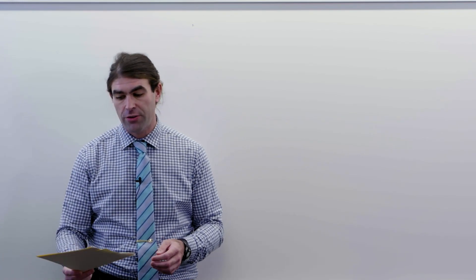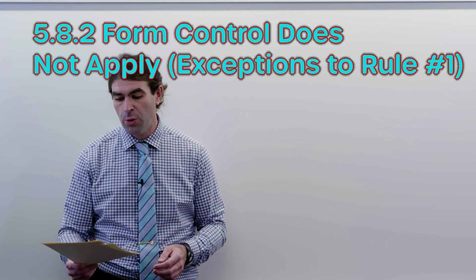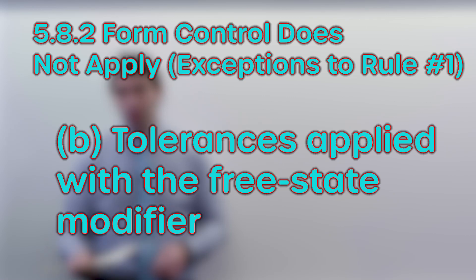I also want to say that this is not in the 2018 standard. They pulled this out. In the 2018 standard on page 36, section 5.8.2, it says that B, tolerances applied with free state modifier do not have to adhere to rule number one. So the 2018 standard says, no, you have to specify on the drawing.